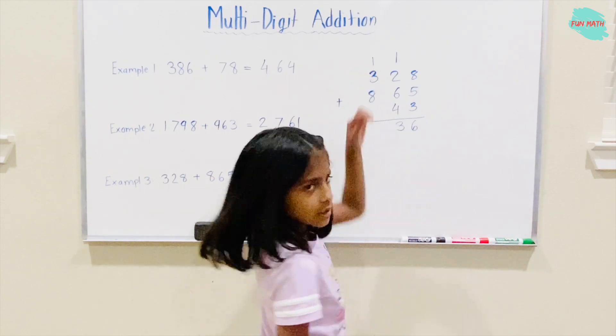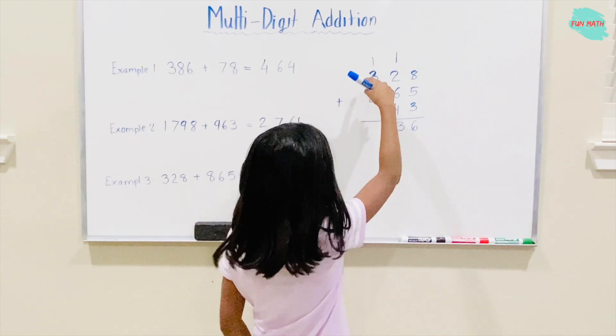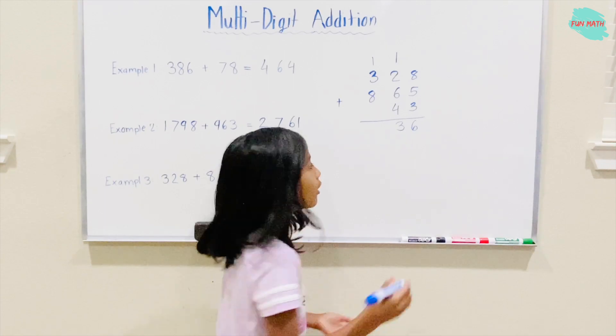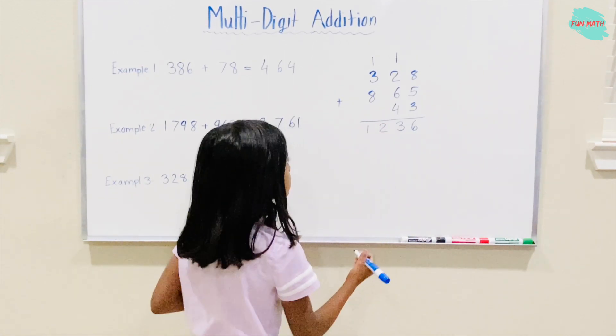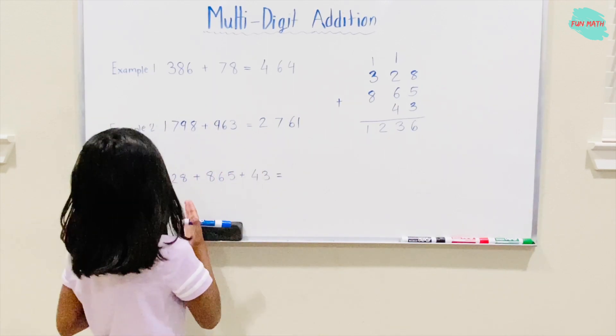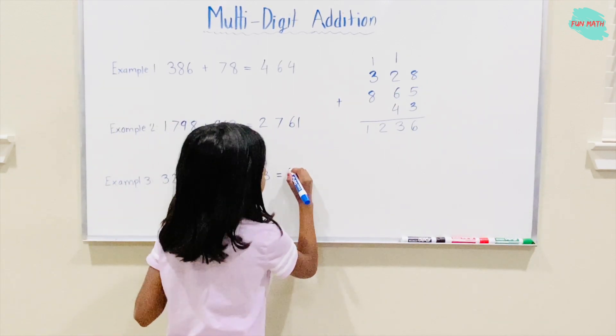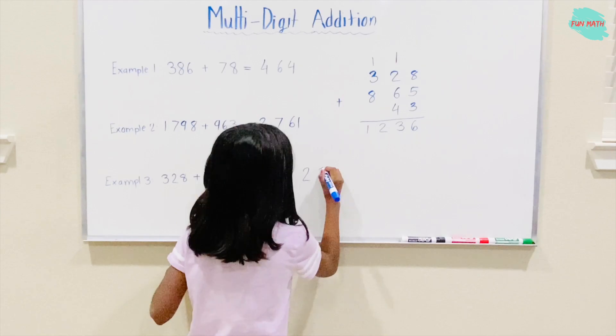3 plus 8 plus 1 is 12. So the answer, the addition for Example 3 is 1,236.